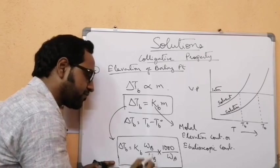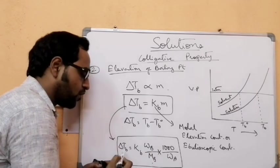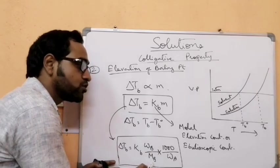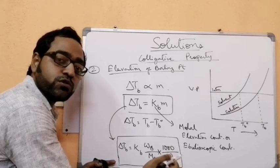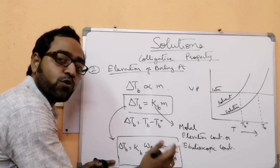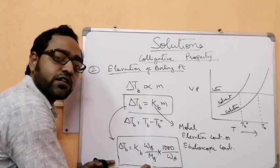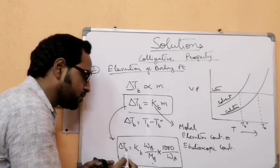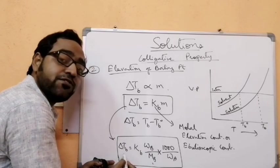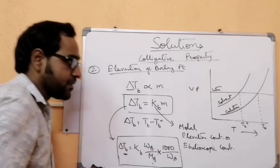From this expression we can find out the molecular weight of the solute — if it is sucrose, glucose, or urea, we can calculate the molecular weight from the elevation in boiling point.